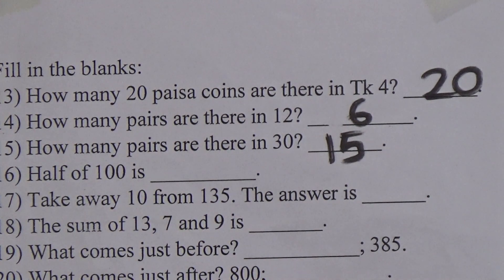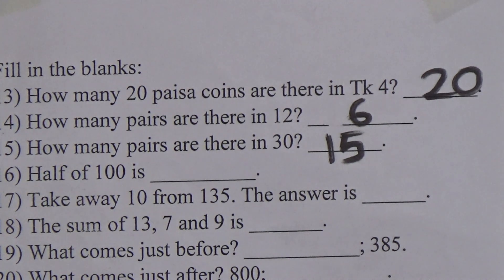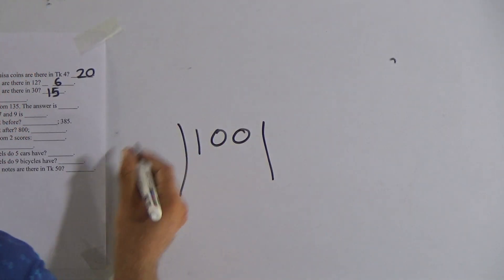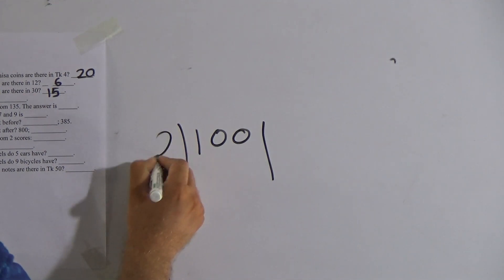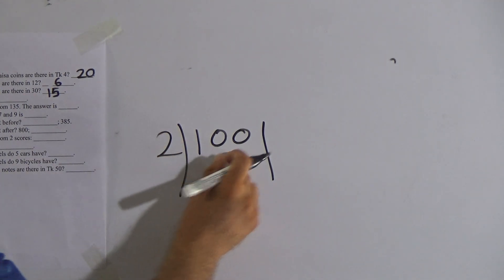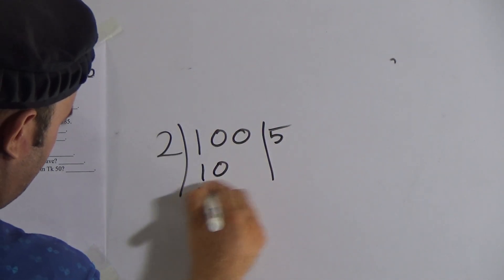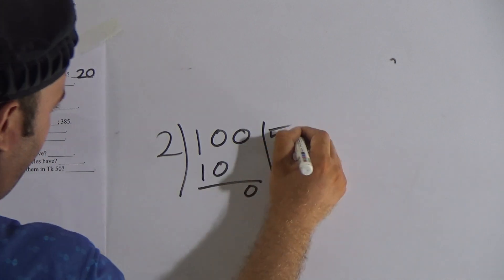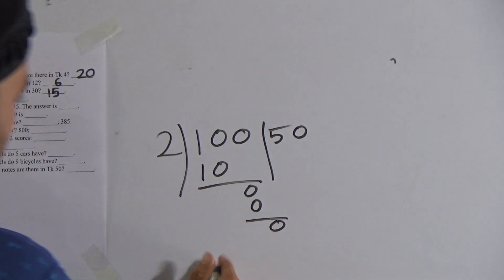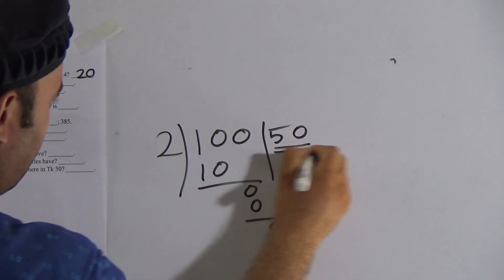Half of 100 — what will be half of 100? Half means dividing by 2. So 100 divided by 2: 10 divided by 2 is 5, and 0 divided by 2 is 0. Therefore the half of 100 is 50.